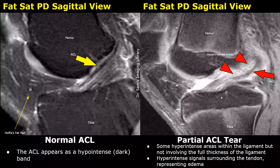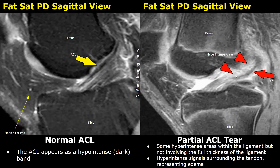This is another case of a partial ACL tear. In the normal fat-saturated proton density image, we can see a normal ACL. Whereas in this image, there are many hyperintense areas indicating hemorrhage and edema. We can still see some intact fibers of the ACL — there is only partial disruption of the fibers. So this is a partial ACL tear.